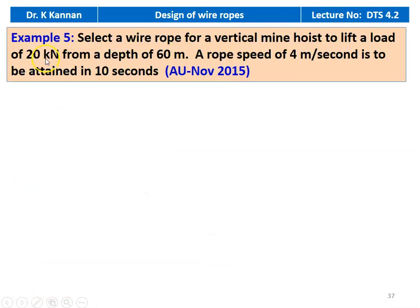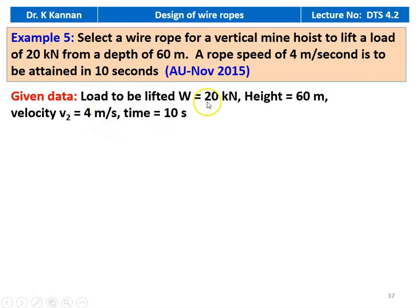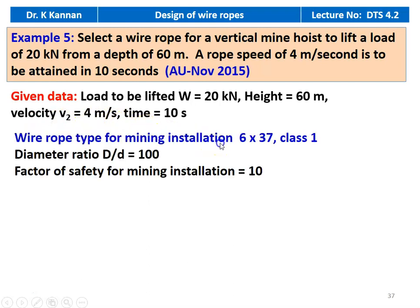Example number 5, from the November 2015 question paper. Select a wire rope for a vertical mine hoist to lift a load of 20 kilonewton from a depth of 60 meters. The rope speed of 4 meters per second is to be attained in 10 seconds. Given data: load W equal to 20 kilonewton, height 60 meter, velocity 4 meters per second, time 10 seconds. Wire rope type for mining installation: 6 by 13, class 1, capital D by small d equal to 100, factor of safety for mining installation is 10.